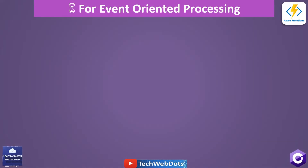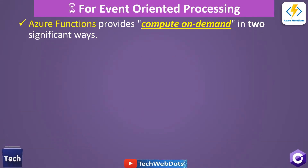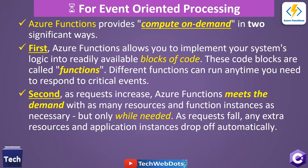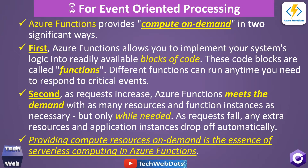For event-oriented processing, Azure Functions provides compute on demand in two significant ways. First, it allows you to implement your system's logic into readily available blocks of code — called functions — which can run anytime you need to respond to a critical event. Second, as demand increases, Azure Functions meets that demand with as many resources and function instances as necessary, but only while needed. As requests fall, resources and application instances drop off automatically.